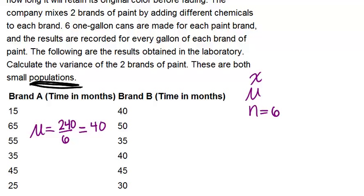Now what about for brand B? We do the same thing, add up all six values and then divide by six. For brand B, the sum is again 240, which means that again when we divide by six, we get our mean is just 40.